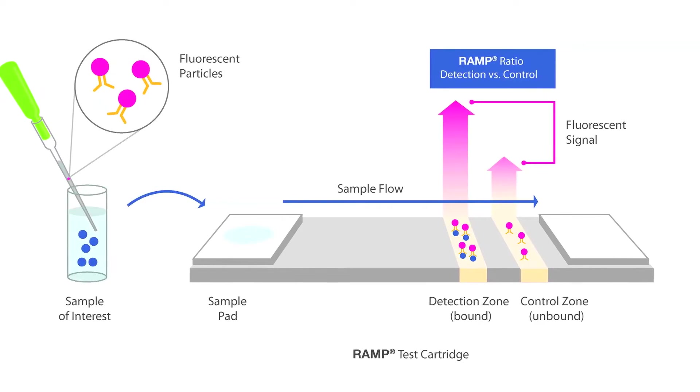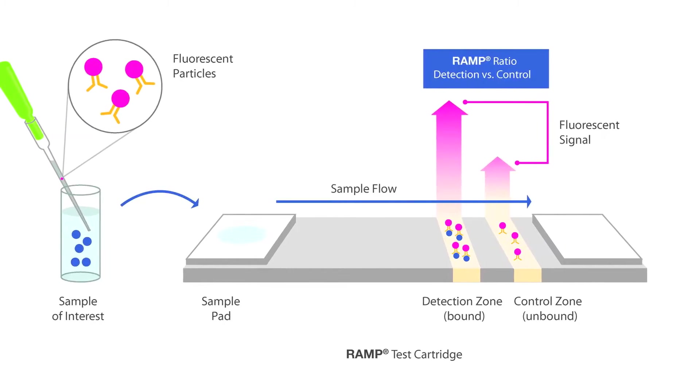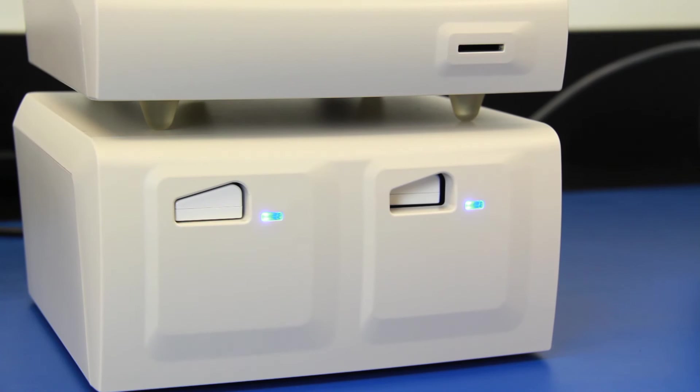The reader measures fluorescence at both zones and, using a proprietary algorithm, calculates a ratio between the two values. This ratio is called the ramp ratio.